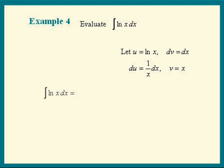The integral of log x dx equals uv minus the integral of v du. Substitute everything in. We get u times v is x log x minus the integral of v du.